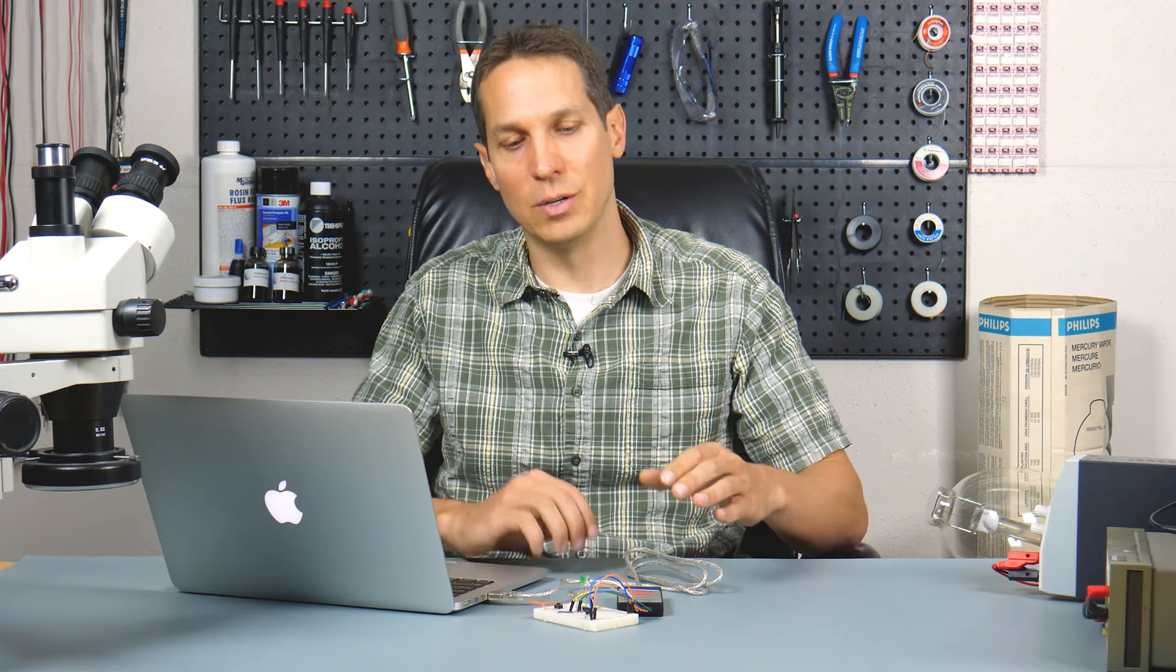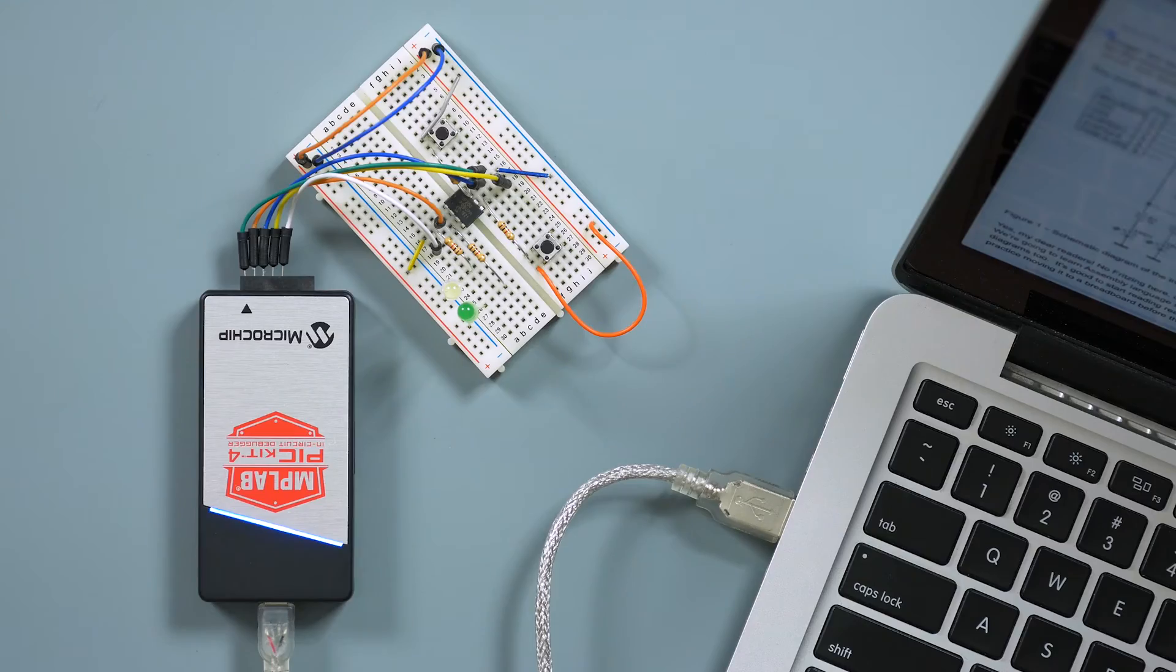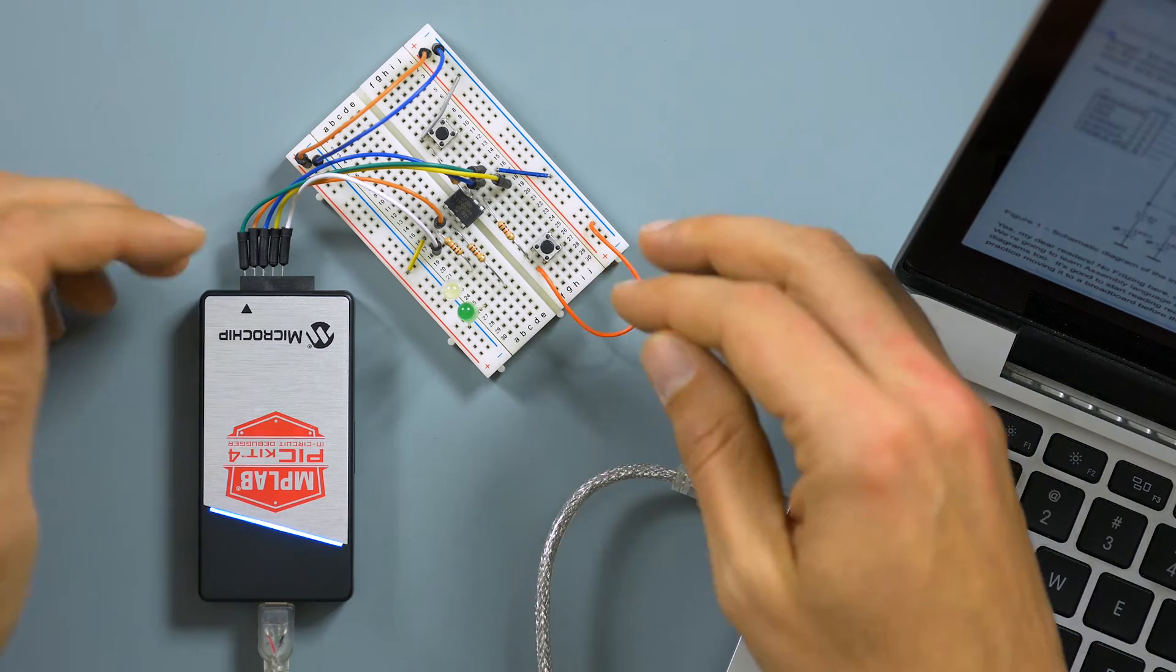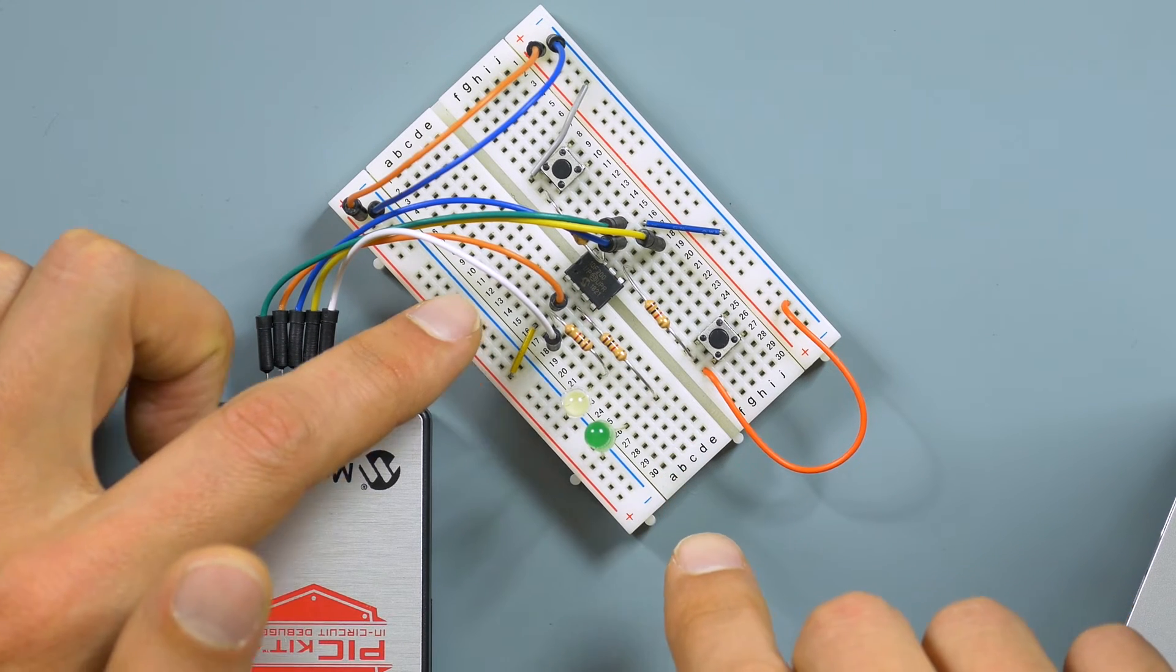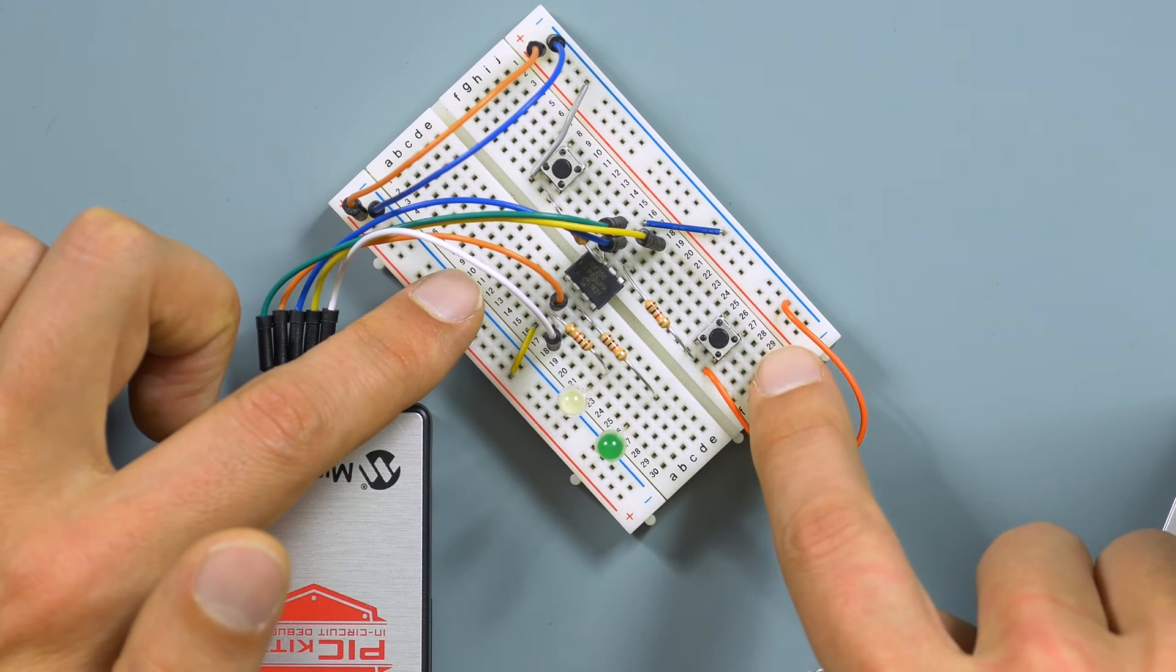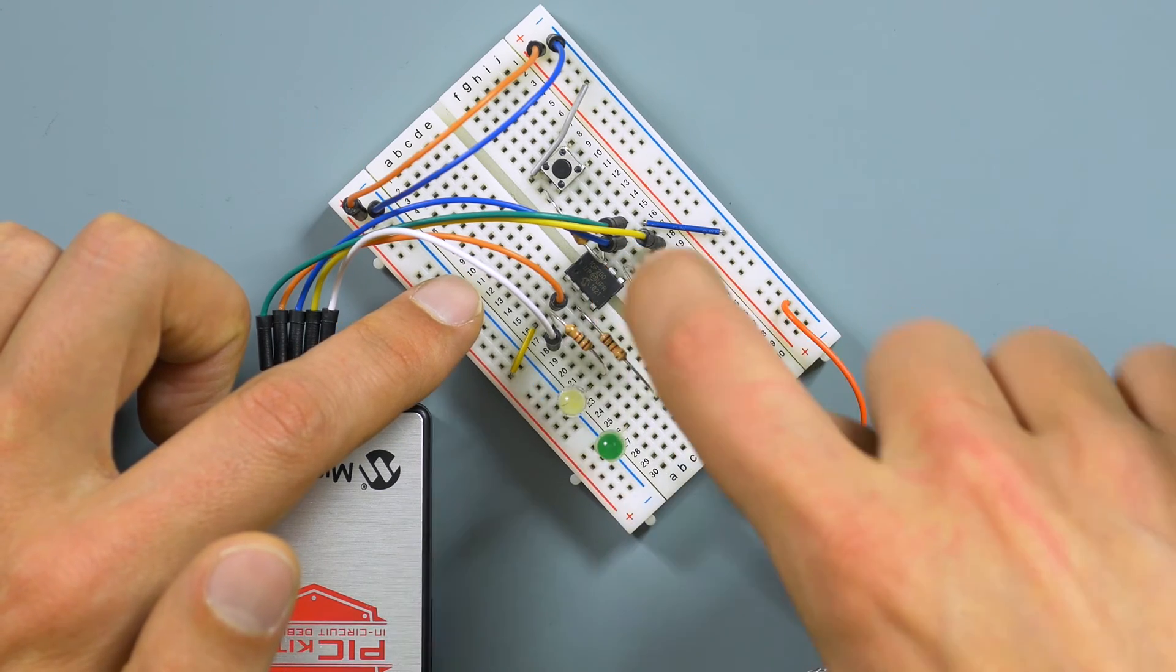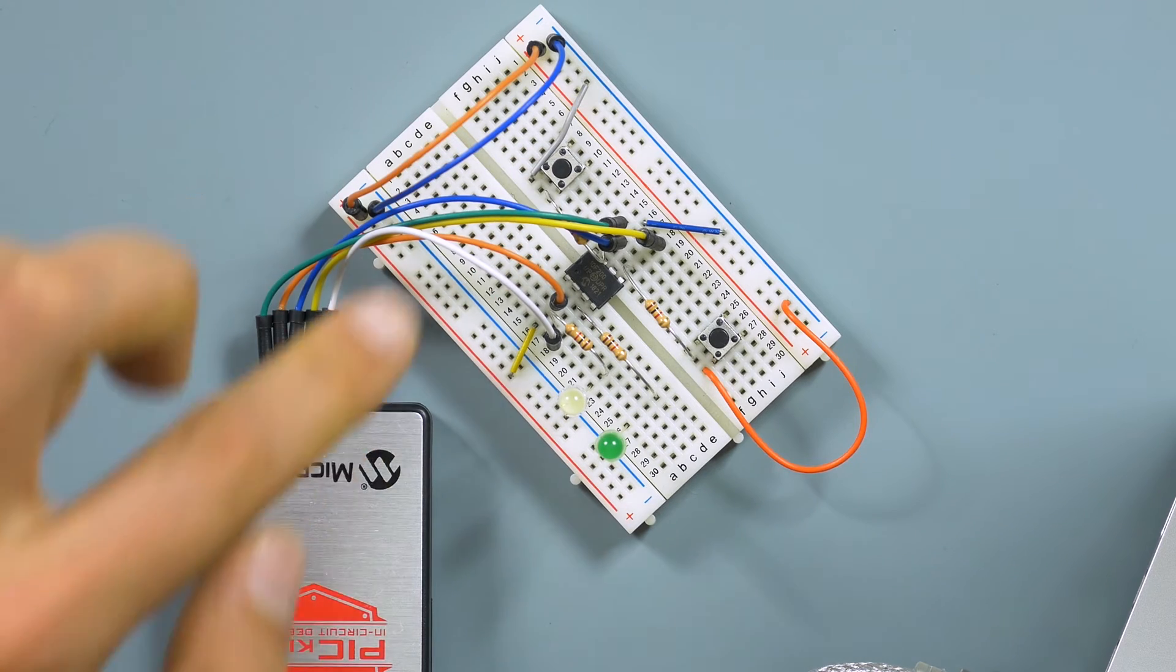The first thing we need to do is get all the parts from tutorial two. So I have my breadboard, I have my Picket 4, and on it you can see there's a microcontroller in the center. Then I have connected to GP2 and GP1 these two LEDs, and I also have switch two and switch one connected to GP0 through that resistor right there and GP3 through that resistor right there.